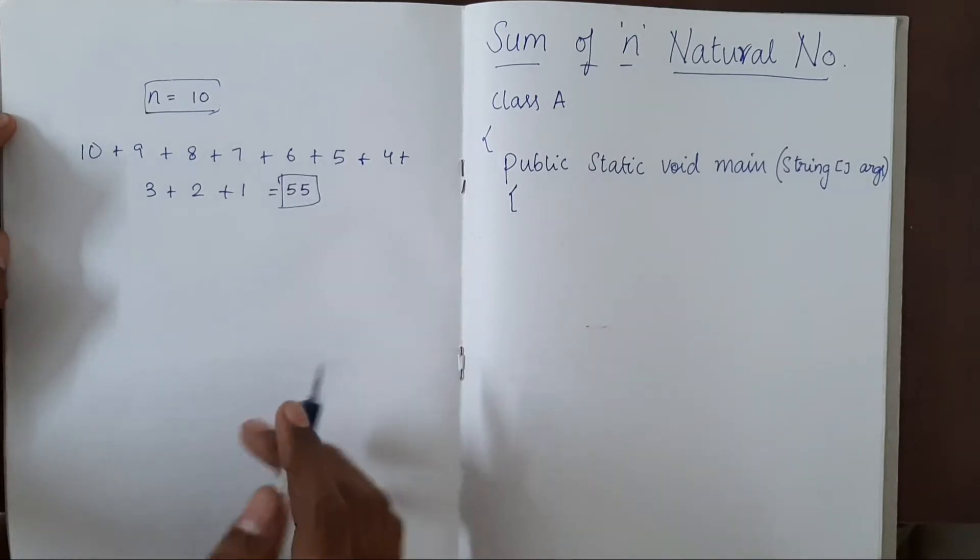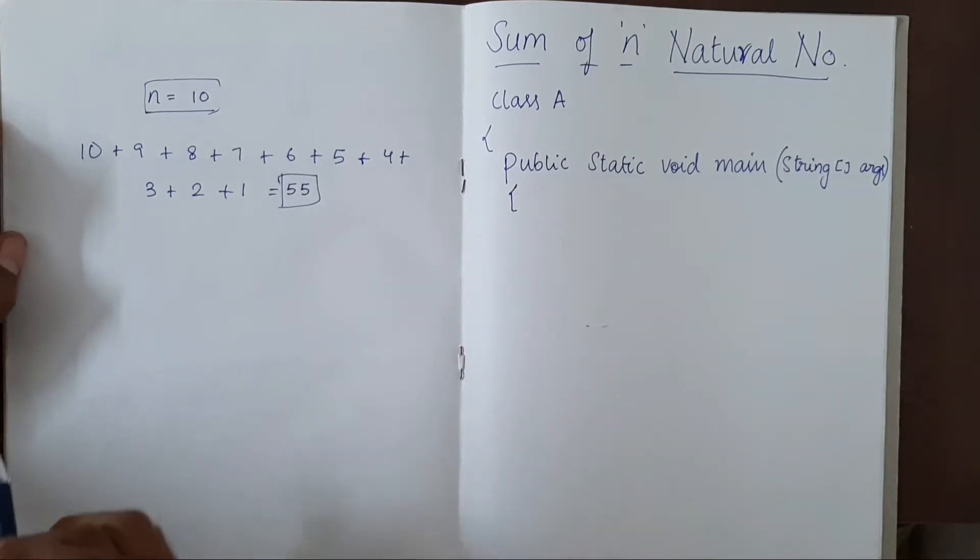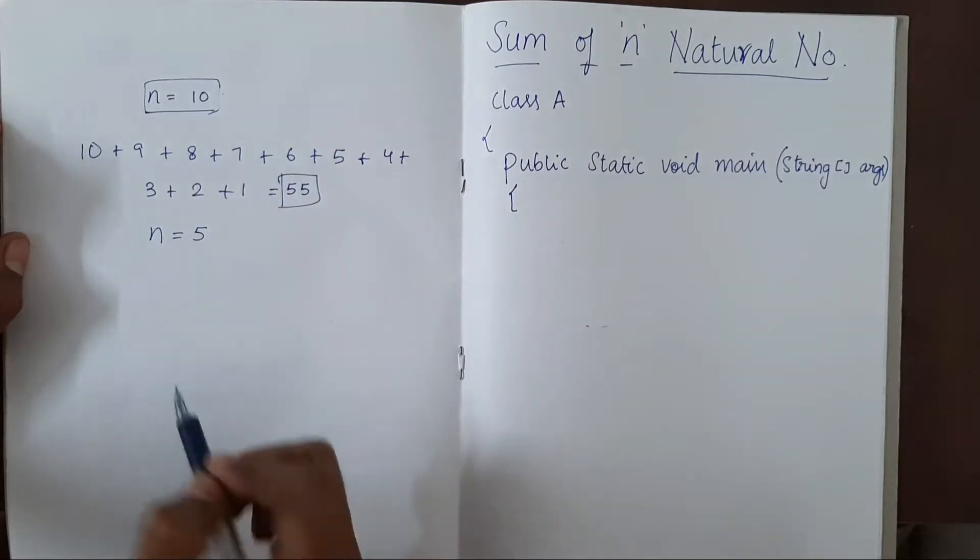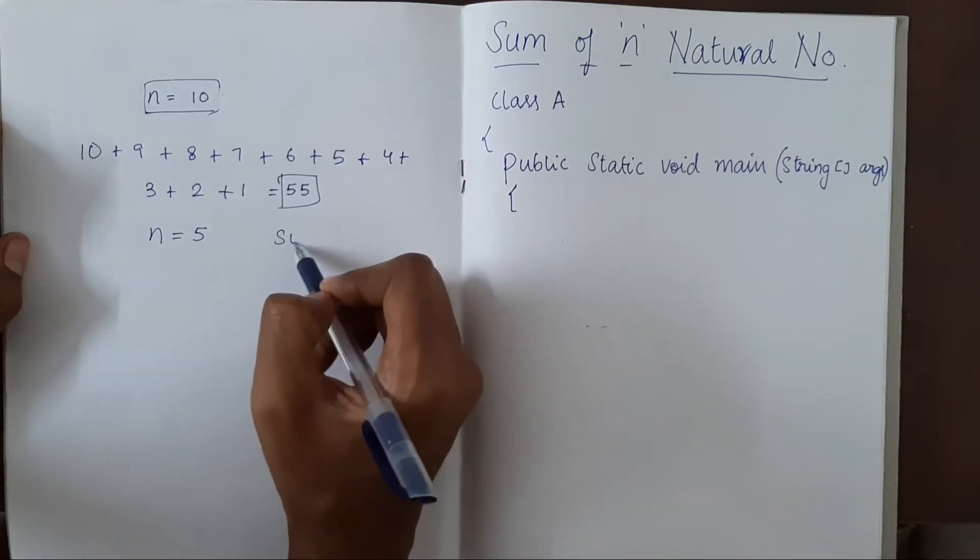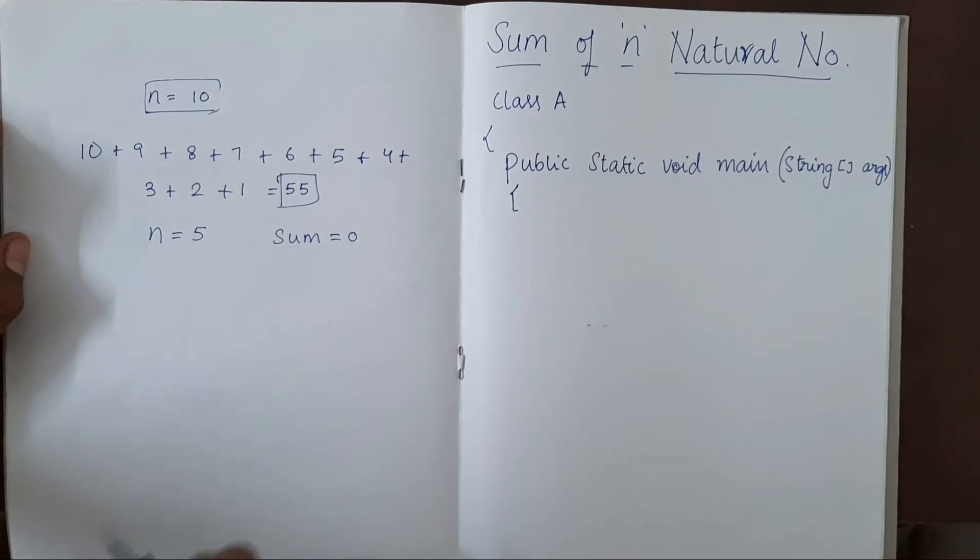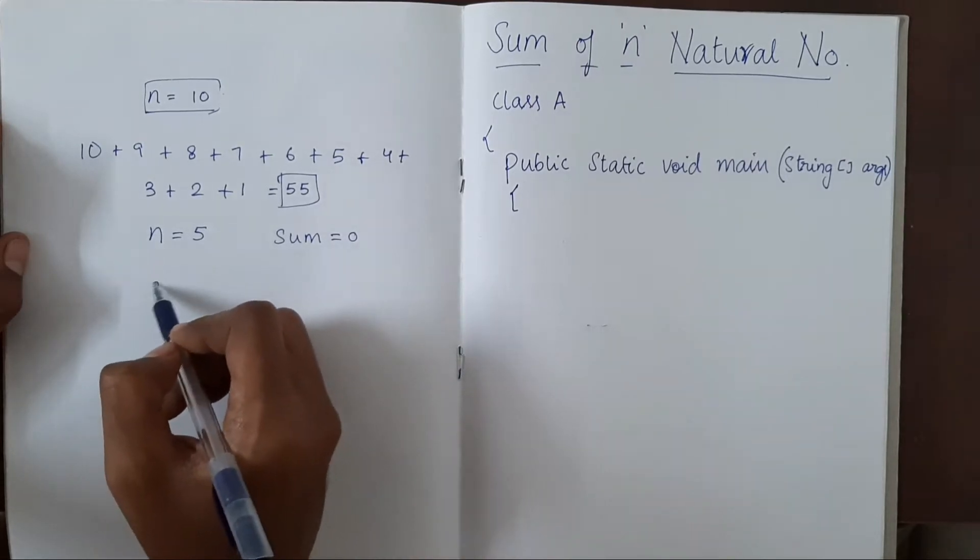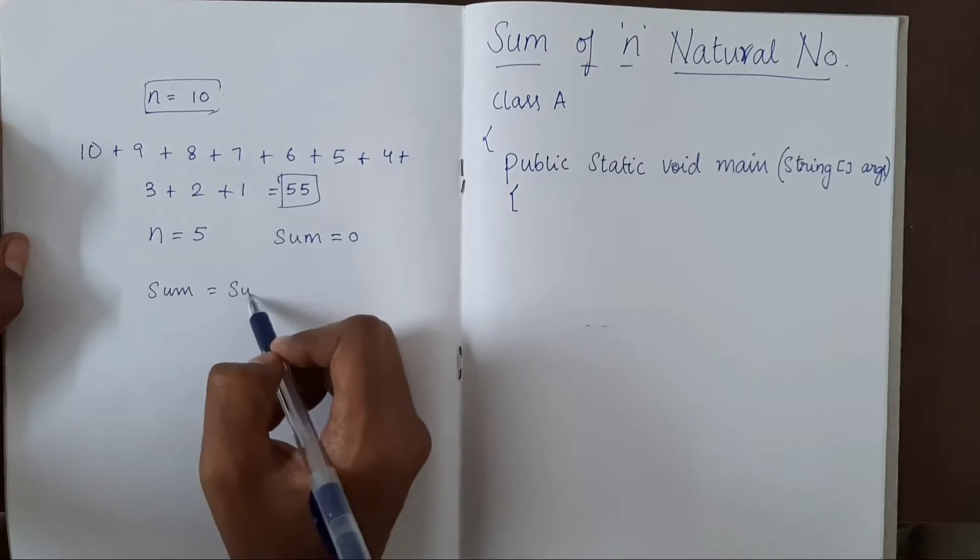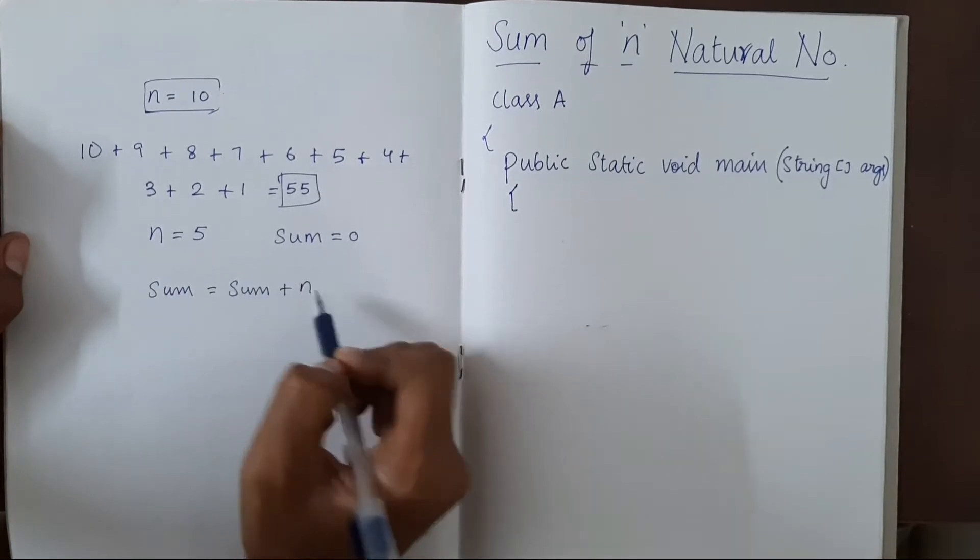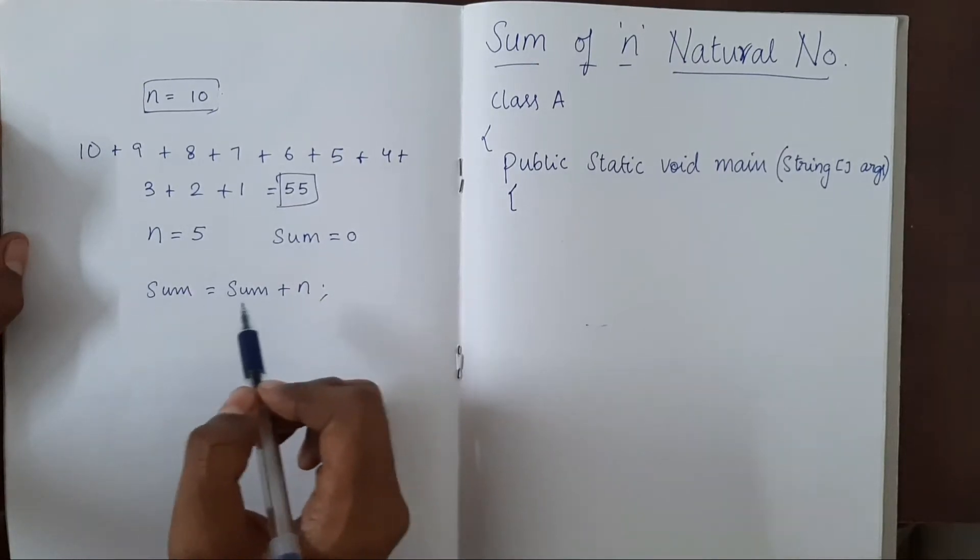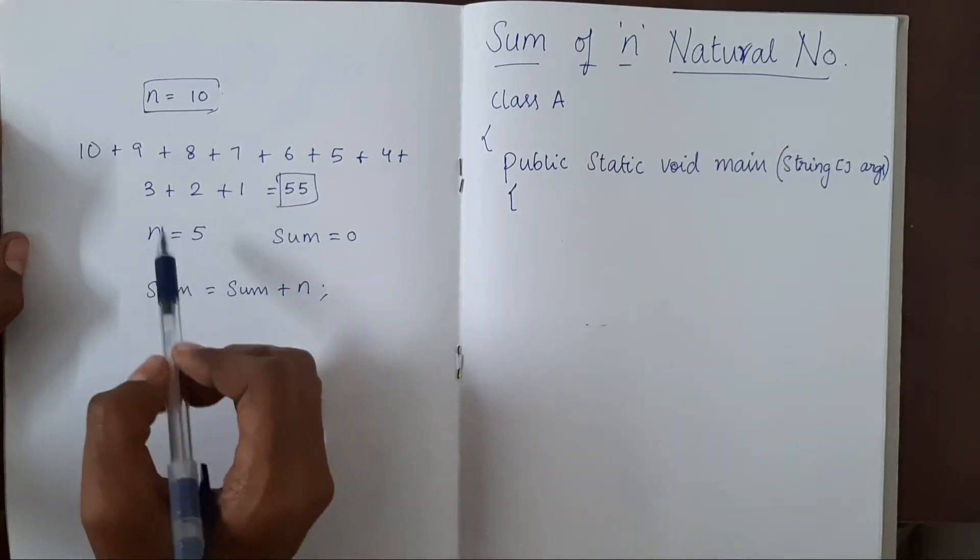So we can do this using a simple while loop. Let's say n equal to 5. We will have one more variable called sum, which will be initially 0. All we have to do is add n to sum. Sum plus n. Now 5 will be added.